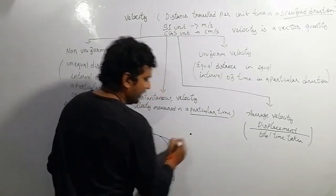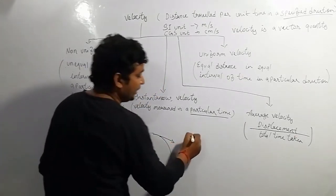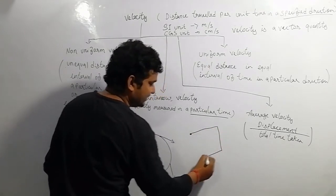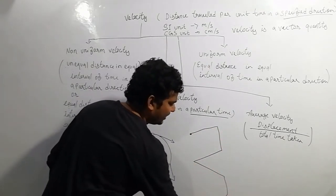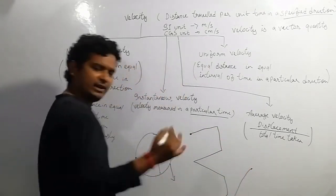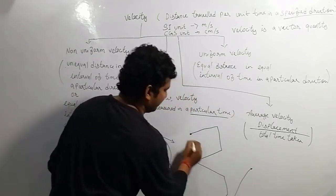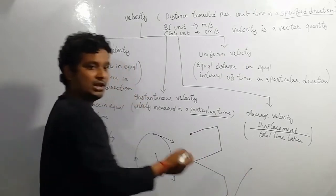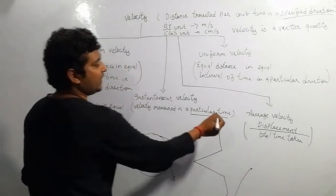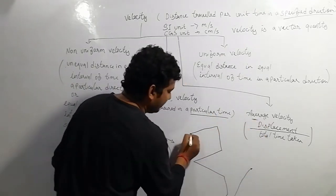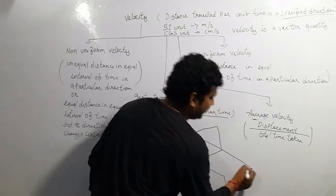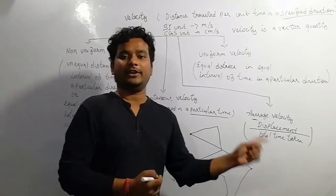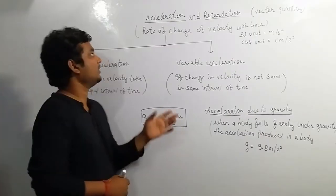Average velocity is displacement divided by total time taken. Suppose a body starts moving and travels in various directions — this direction, that direction — and finally reaches a particular point. The path it traveled gives total distance, but for average velocity we find the displacement of the body divided by the total time taken.